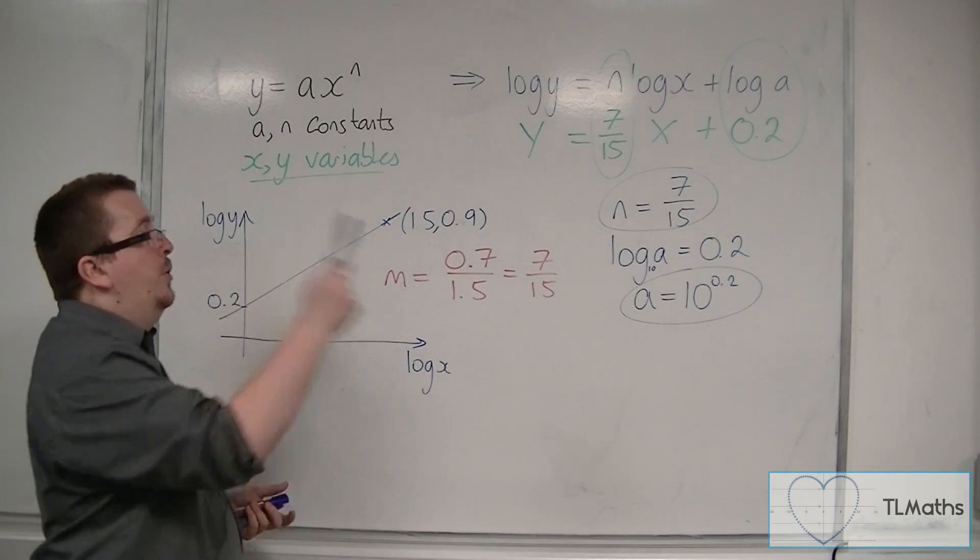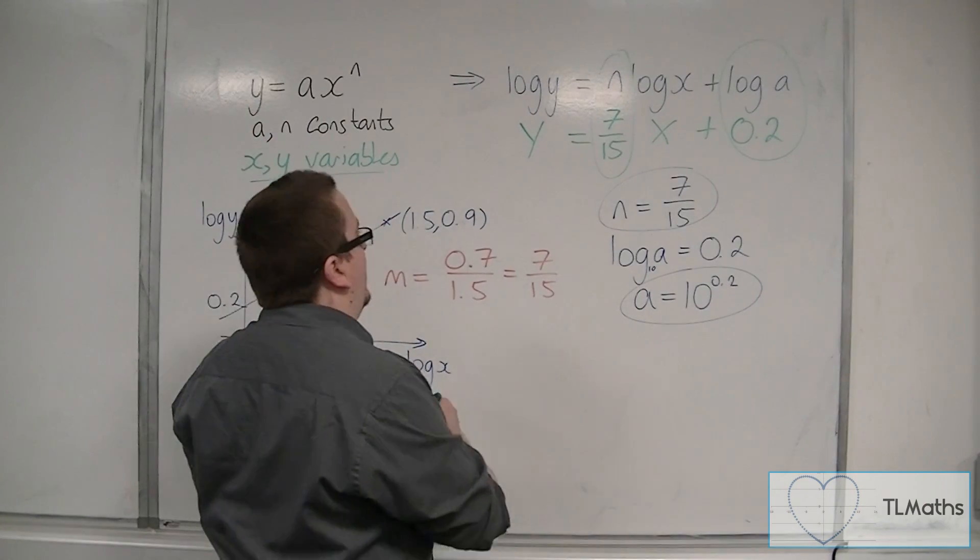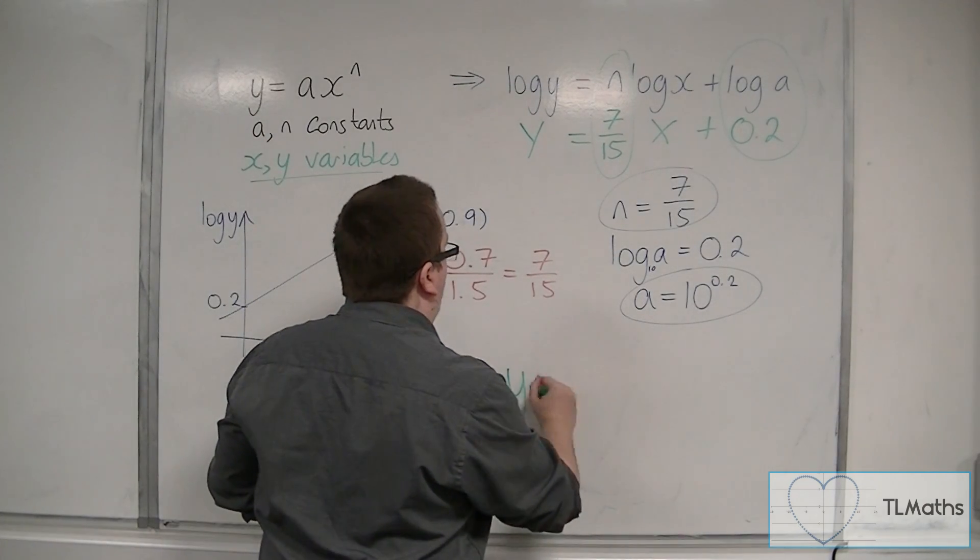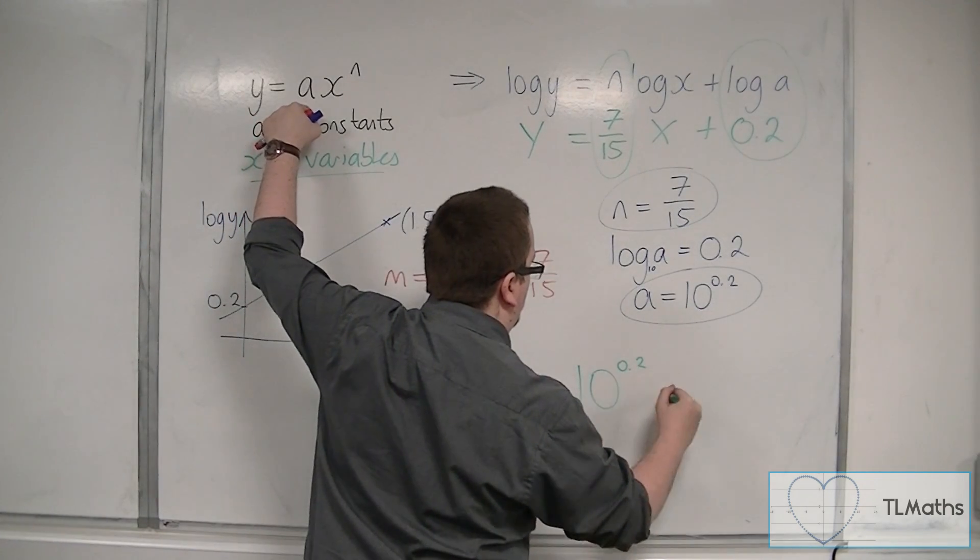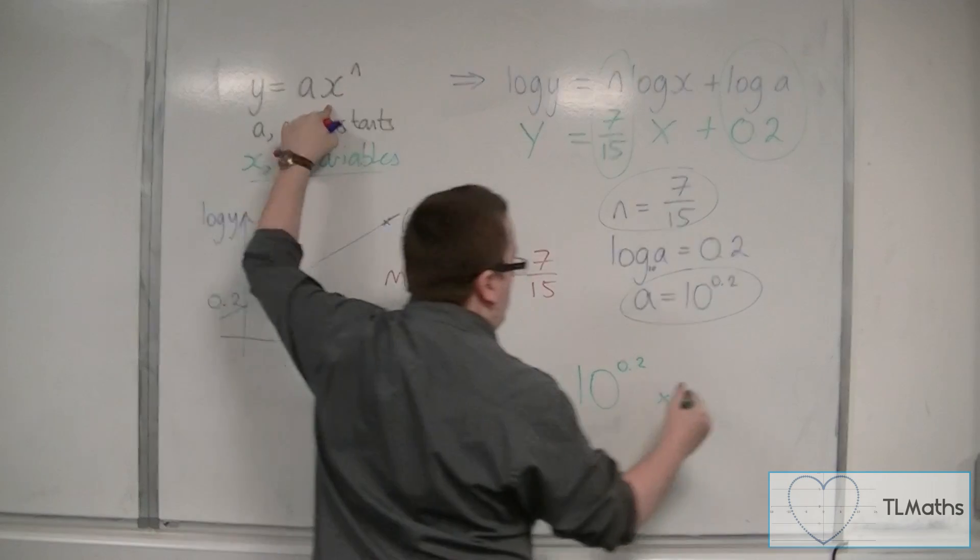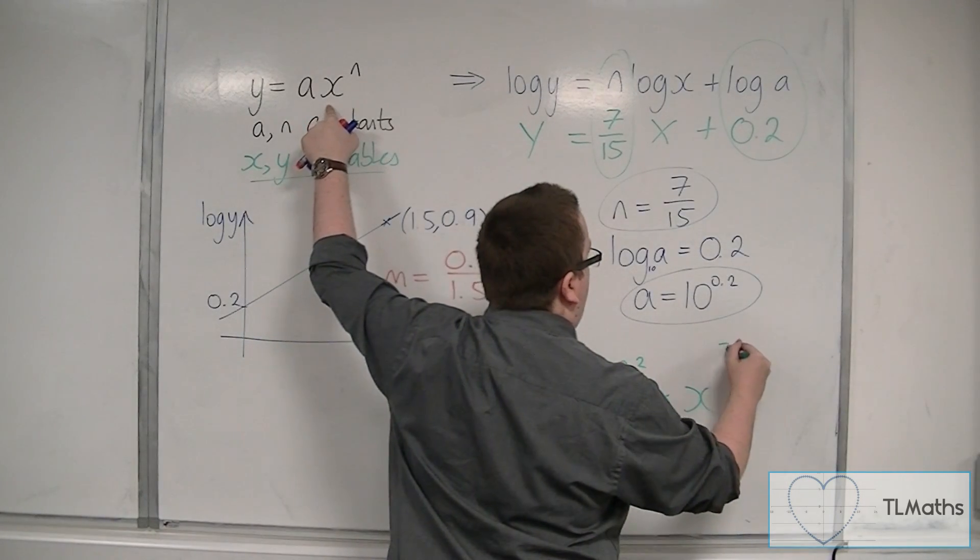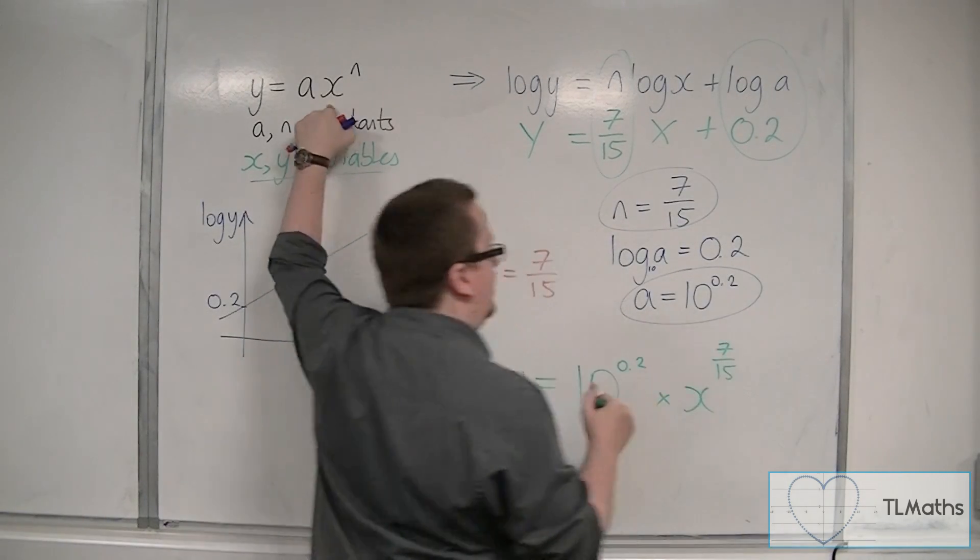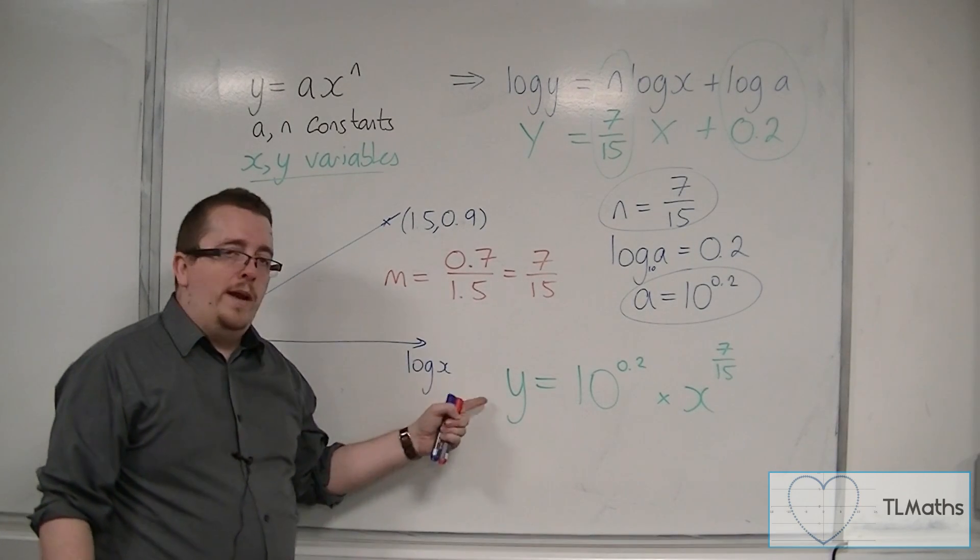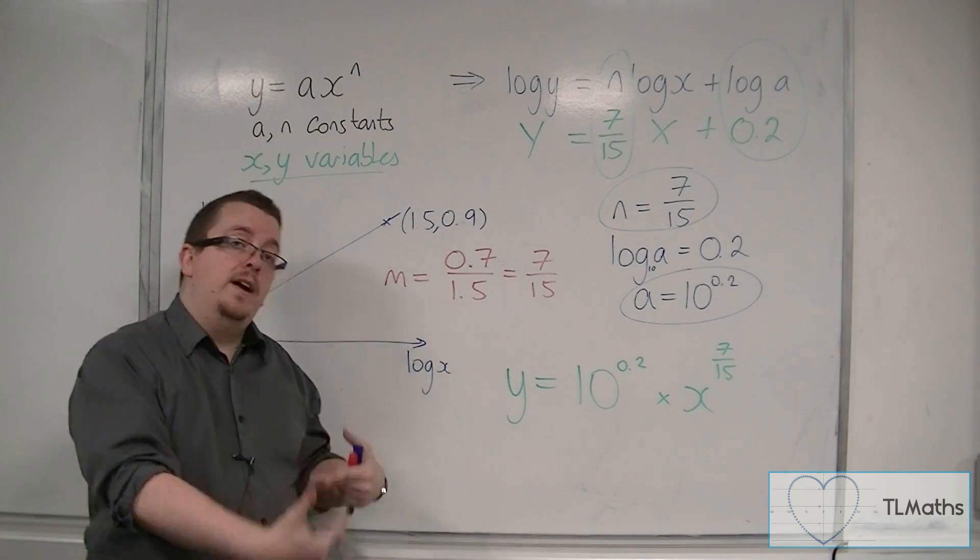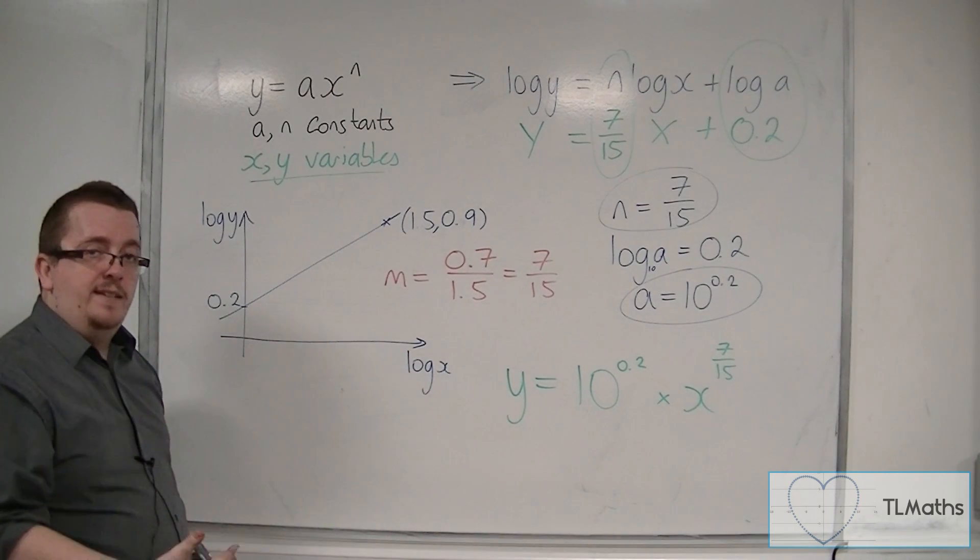And so, I can put those back into the original equation, so that y is equal to a, so 10 to the 0.2, times x to the power of n, 7 fifteenths. And this is the equation of the curve that will fit the original data.